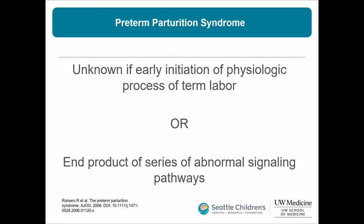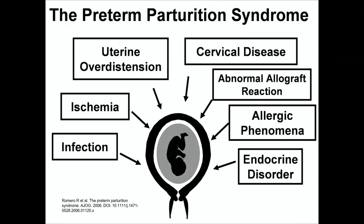There are many different things that can lead to preterm birth, including infection, ischemia, uterine overdistension — which is why multiples like twins and triplets tend to deliver early — and other factors. These all share a common pathway, which is why the term 'preterm parturition syndrome' is used.